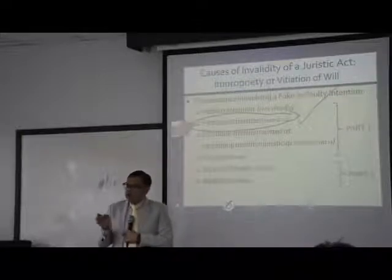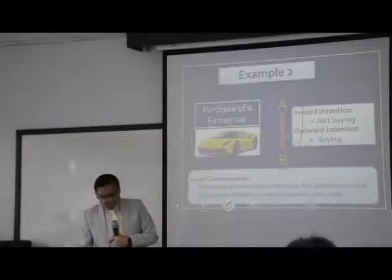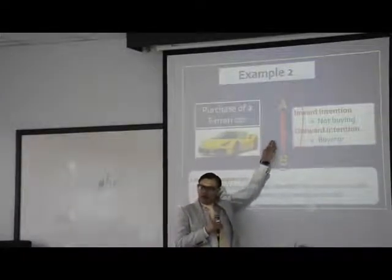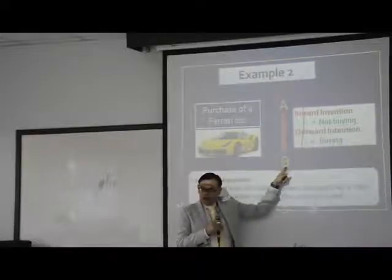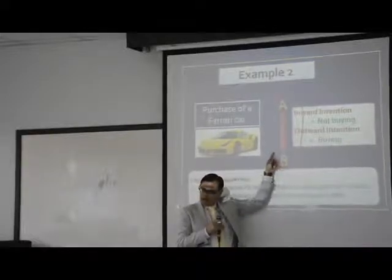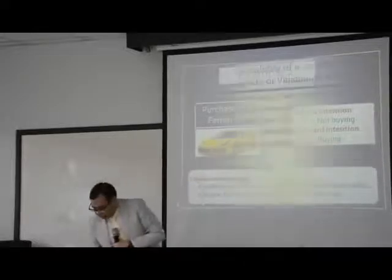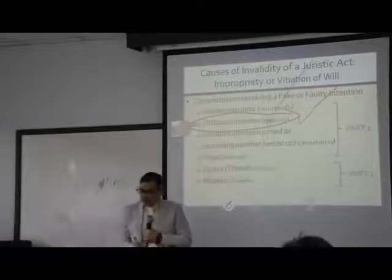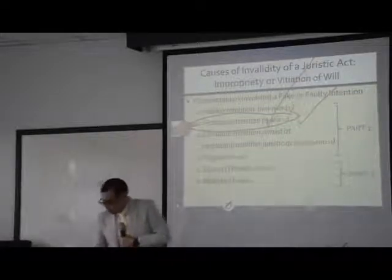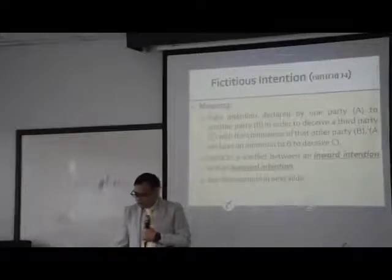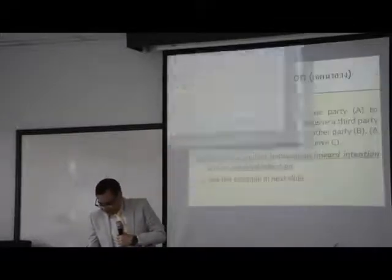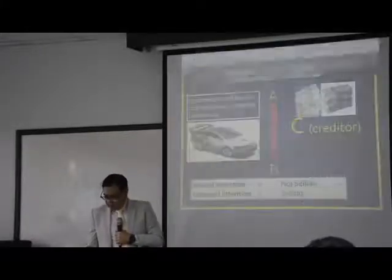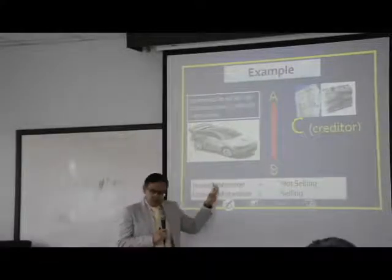A while ago, we talked about the situation between A and B. If we go back to the diagram, A did not have the real intention. He pretended to make a contract, but B might not know A's intention. But in the second situation — the situation which we call the fictitious intention — this is where the two parties enter into some conspiracy. If I try to begin with this diagram, I think that it's going to help you very much.